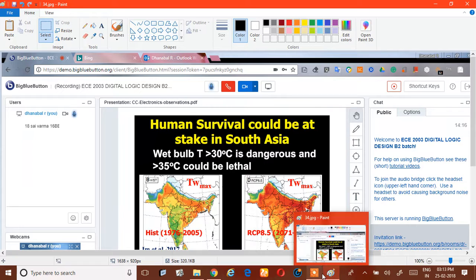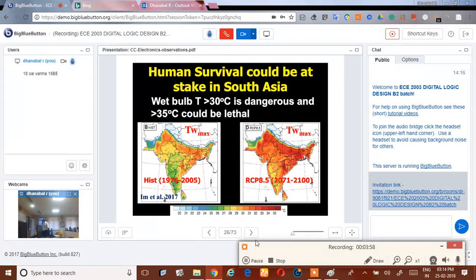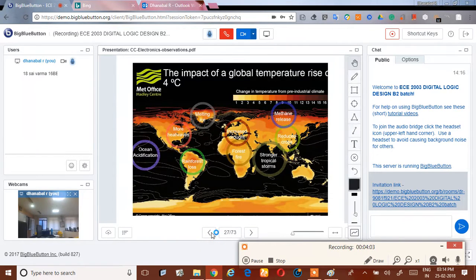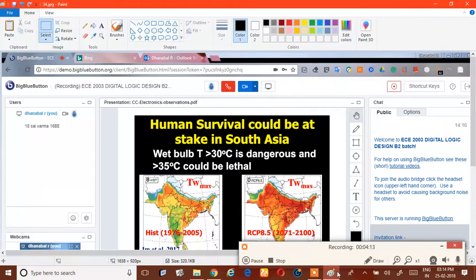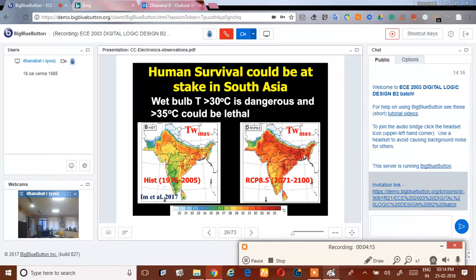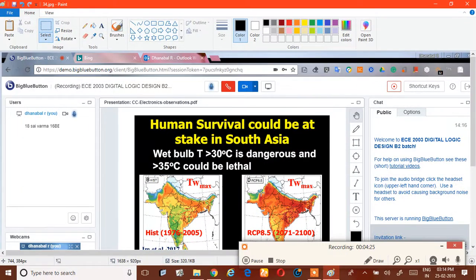So scientists have actually run this model to project what will be the wet bulb temperature by 2100. And you can see, right now, there is no place in India where the wet bulb temperature, in some places, it does reach about 30 degrees. But you don't see any place where the wet bulb temperature is above 35. Now, if you look at the prediction for the end of the century, you can see, several places here, the wet bulb temperature actually could, at least once or twice in a year, reach 35 degrees.